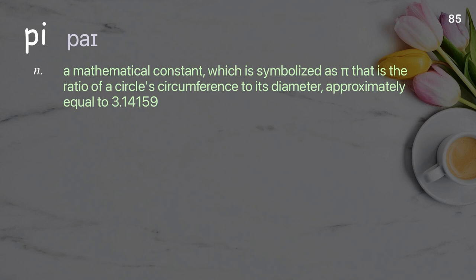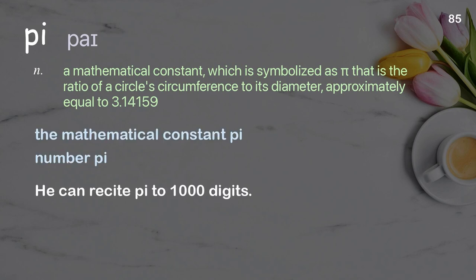Pi. A mathematical constant symbolized as π that is the ratio of a circle's circumference to its diameter, approximately equal to 3.14159. Examples: the mathematical constant pi, number pi. He can recite pi to 1,000 digits.